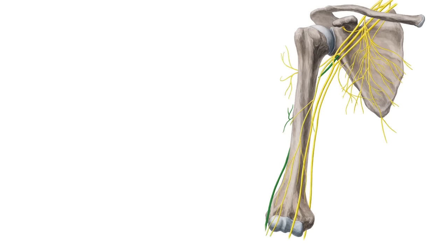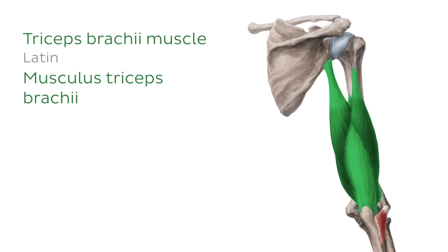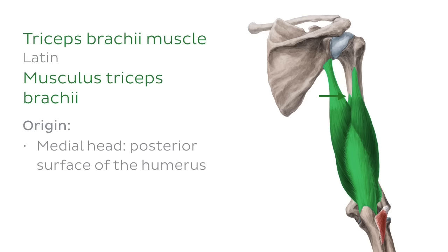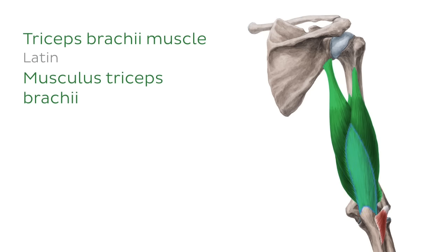Now let's flip to the posterior compartment. The posterior compartment consists of two muscles, the first being the triceps brachii. As its name suggests, the triceps brachii has three heads. The long head originates from the infraglenoid tubercle of the scapula. The medial head, the smallest of the three, arises from the posterior surface of the humerus inferior to the radial groove. The lateral head originates from the posterior surface of the humerus superior to the radial groove. All three heads fuse into a common tendon, which crosses the elbow joint before inserting onto the olecranon of the ulna.